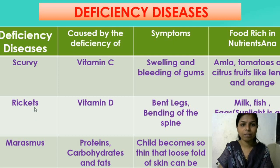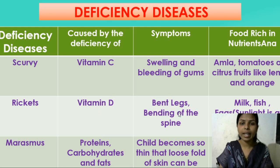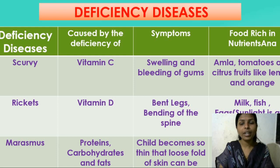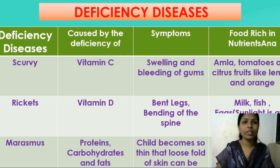The next one is Rickets. It is caused due to the lacking of Vitamin D. The symptoms of Rickets are bent legs and bending of the spine. To avoid rickets, we have to take milk, fish, eggs, and sunlight, which is also an important source of Vitamin D. Every morning and in the evening we have to get this Vitamin D so we can avoid Rickets.